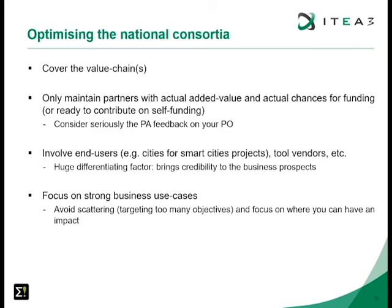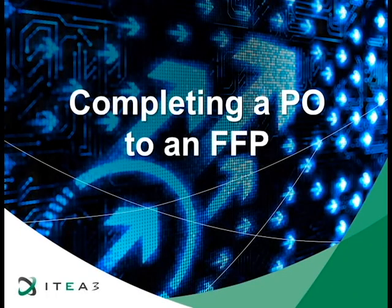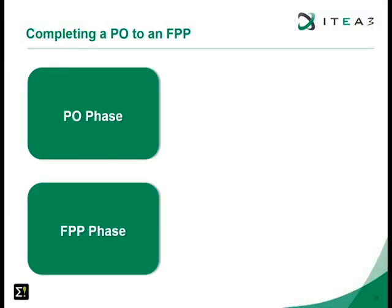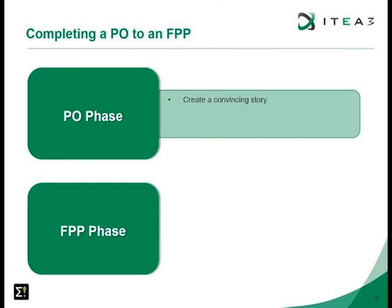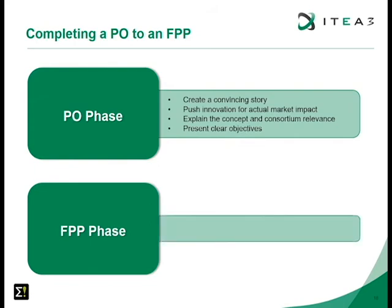How do you practically complete the PO into an FPP? In the PO phase we expect a convincing story pushing innovation for actual market impact, explaining the concept and consortium relevance, and presenting clear objectives. For the FPP we require more detail: refine the PO based on evaluation feedback, write a convincing realisation plan, and describe every work package in detail.